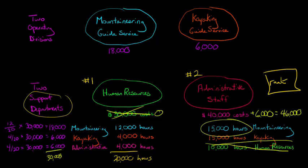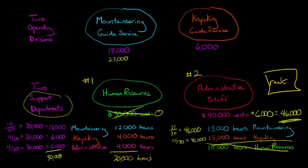For administrative staff, we look at the remaining 15,000 hours of mountaineering and 15,000 hours of kayaking. We take 15 over 30 times $46,000, which gives us $23,000 allocated to mountaineering. Then 15 over 30 times $46,000 for kayaking — again using $46,000 because it includes that $6,000 allocated from HR — gives us another $23,000 going to the kayaking guide service.